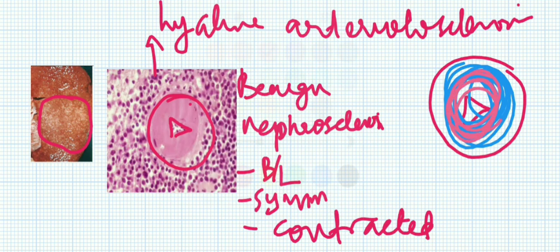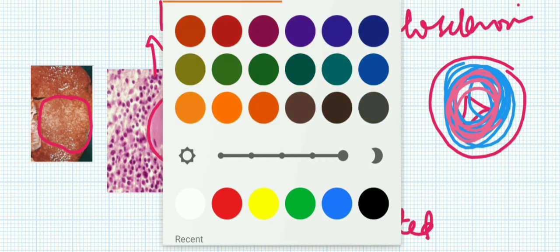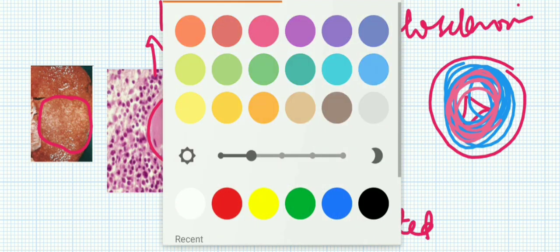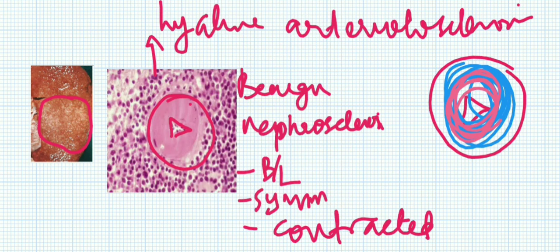Otherwise you may get confused, so let me make the color pink. That covers benign and malignant hypertension, and hyaline and hyperplastic arteriolosclerosis.